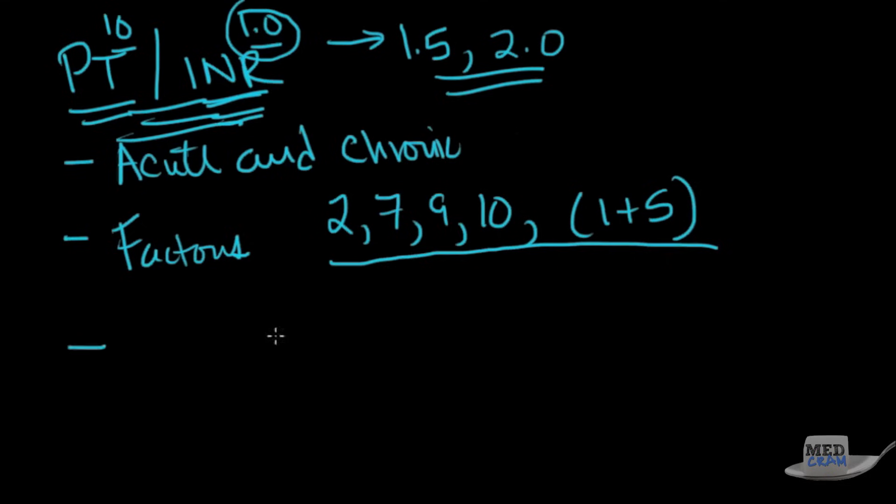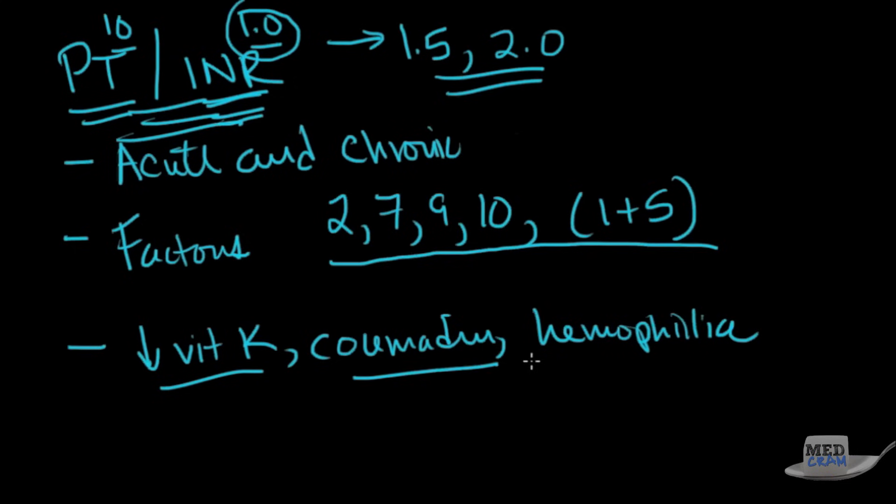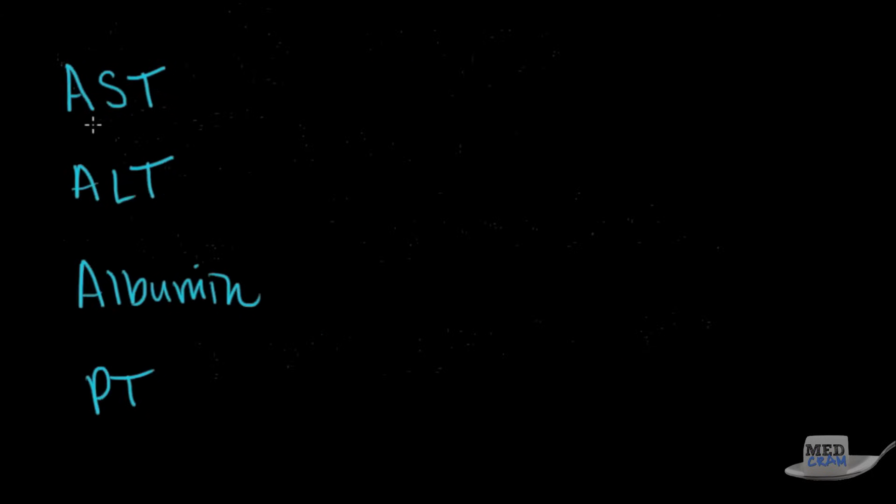Now, what are some other things other than liver disease that could cause it? Obviously, if the patient has low vitamin K, that's going to be a confounder. If the patient obviously is on Coumadin, which is a blood thinner, that's going to confound it. Or if the patient has hemophilia, that's obviously going to confound it. So if they have low vitamin K, just give them vitamin K. If they have Coumadin, obviously, you're not going to use this test to see if they have liver disease because you're trying to get their INR up anyway because that's why they're on a blood thinner in the first place.